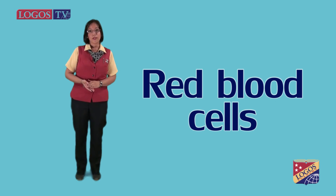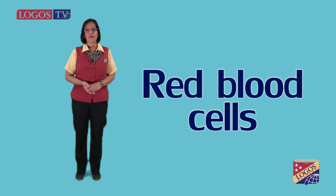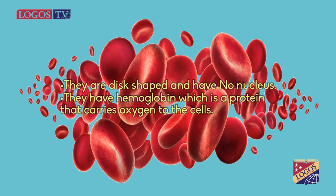Red blood cells are disc-shaped and have no nucleus. They have hemoglobin, which is a protein that carries oxygen to our cells.